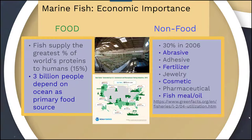Approximately 30% of fish harvested at sea — at least in 2006 — are used for non-food purposes. Portions of their body can be used as an abrasive, their bones can be used as adhesive, and parts can be used as fertilizer, jewelry, and in cosmetic and pharmaceutical applications. Fish meal and fish oil are probably the most familiar products. There's information available about how fisheries make the most of their catch, since fish not appropriate for food can have other uses and be sold in other markets.